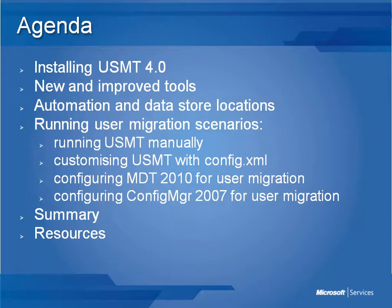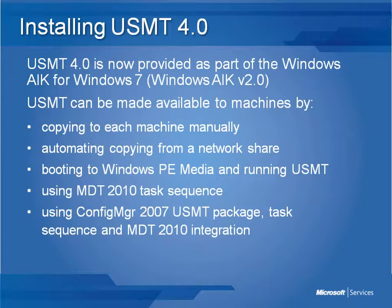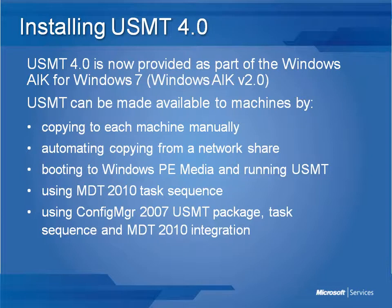Let's start by discussing how User State Migration Toolkit 4.0 is installed. USMT4 is now provided as part of the Windows Automated Installation Kit, meaning it's no longer provided as a separate download. To install it, you need to download the Windows Automated Installation Kit for Windows 7 and install it onto a workstation or server. Once installed, the USMT binaries will be available in the Tools folder within the Windows AIK.